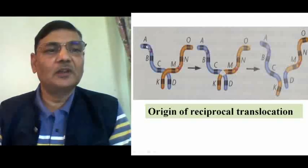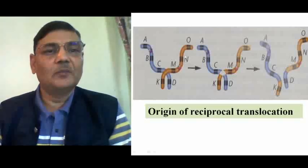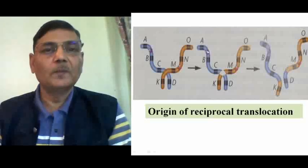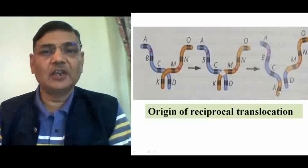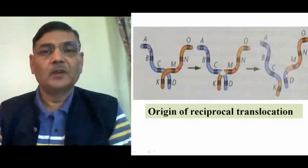Consider a chromosome on which genes are arranged as A, B, C, and D. The other non-homologous chromosome carries genes K, M, N, O. After exchange of chromosome parts between the two, one chromosome now has genes A, B, C, and K, while its non-homologous counterpart has genes D, M, N, O. The K portion of the right-side chromosome has come to the first, and its D gene has shifted to the non-homologous chromosome. These two are the translocated chromosomes, and the two on the left are the normal chromosomes.